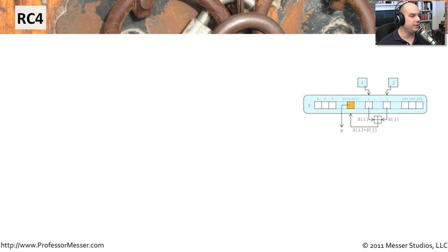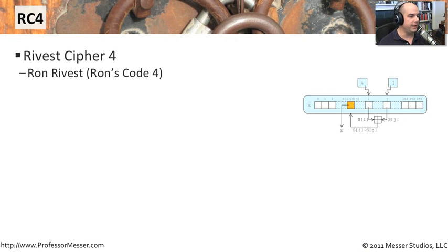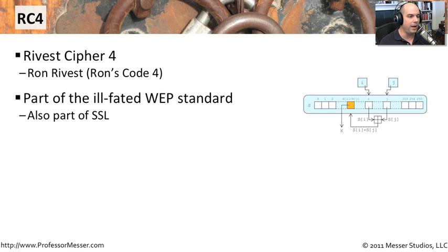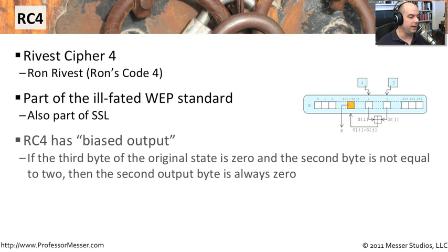The first one we'll look at is RC4. This stands for Rivest Cipher 4. Some people may say it stands for Ron's Code 4, because this was written by Ron Rivest, one of the fathers of modern cryptography. This is also part of the WEP standard — the wireless encryption that we used but really don't use anymore, because of all the problems associated with WEP. Part of those problems were related to vulnerabilities and issues in the RC4 methodology.